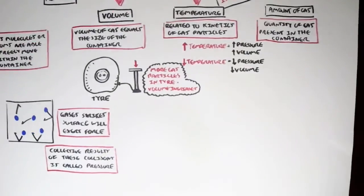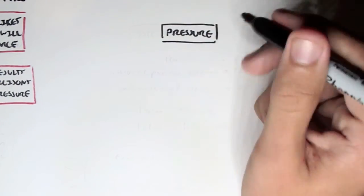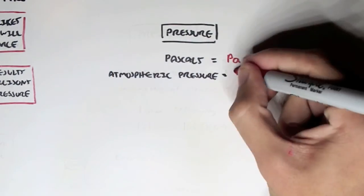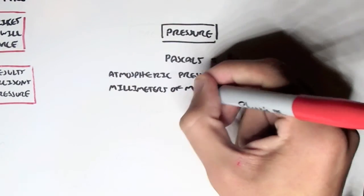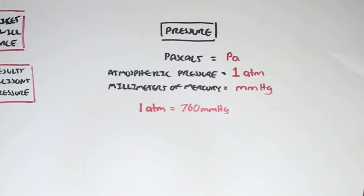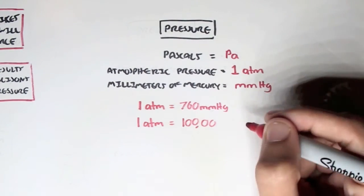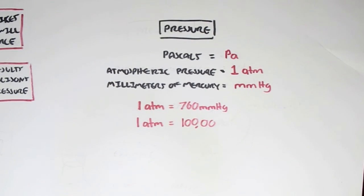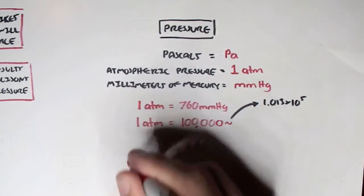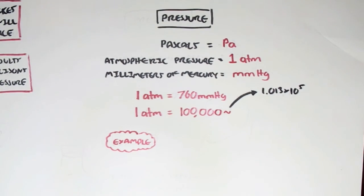Now, pressure. Pressure we can measure in Pascals, abbreviated Pa. We can measure atmospheric pressure as 1 atm. And we can also measure it commonly in millimeters of mercury, millimeters Hg, where the element mercury is Hg. So if we do conversions: 1 atmospheric pressure equates to 760 millimeters mercury. And 1 atmospheric pressure also equals roughly 101,300 Pascals.